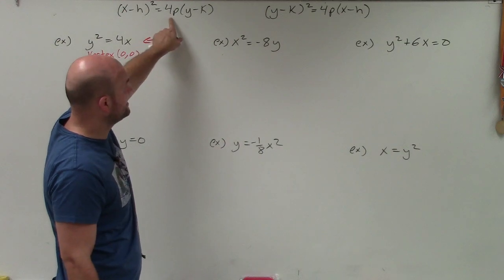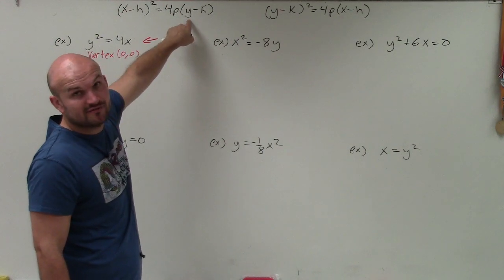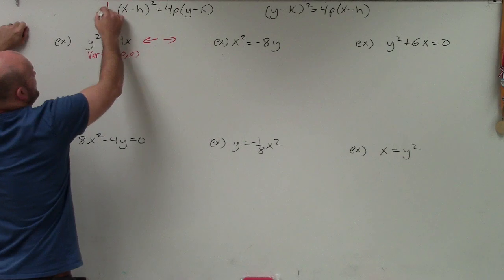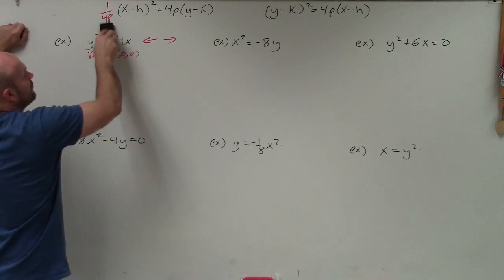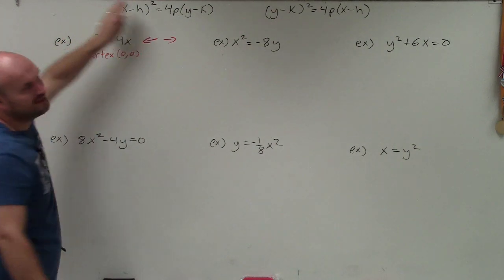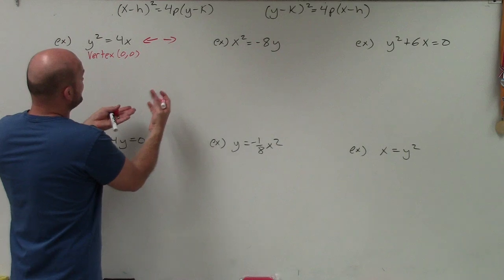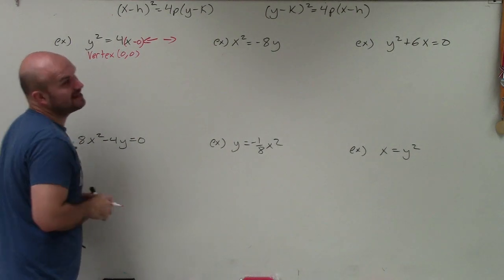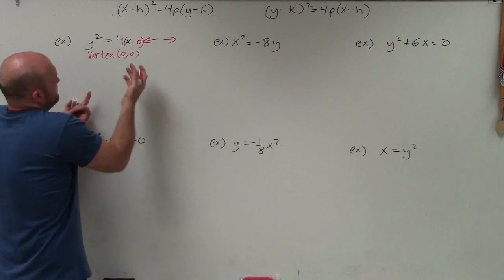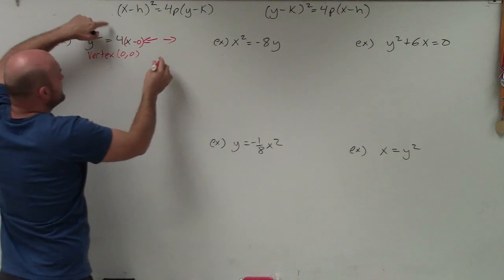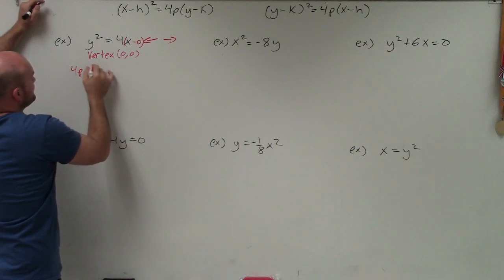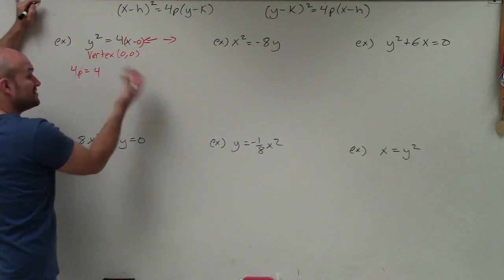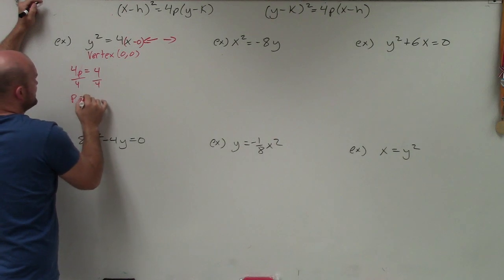In these equations, 4p is multiplied by my linear variable. So I can see that 4p, which is that coefficient, is equal to 4. To find p, I divide by 4, and p is equal to 1. Now that's very important — this graph opens left or right, but since p is positive, that means the graph is going to open to the right.